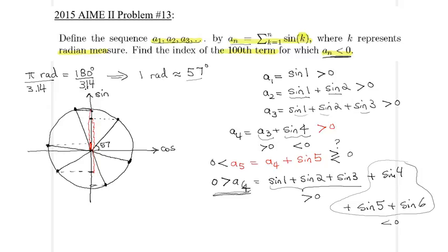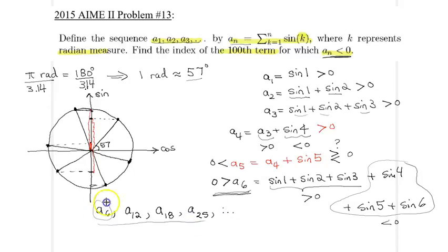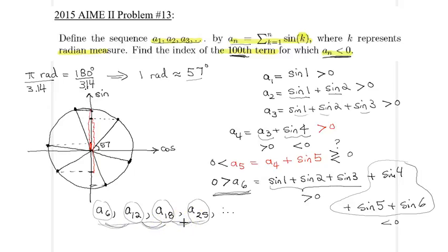Using a computational device, the subsequent negative terms occur at a₁₂, then a₁₈, and then — surprisingly — not a₂₄ but a₂₅, and so on. So the period of the sequence is mostly 6 but sometimes 7. Intuitively, you might guess the answer for the 100th negative term is slightly more than 600, which turns out to be correct. We'll now find the exact value.